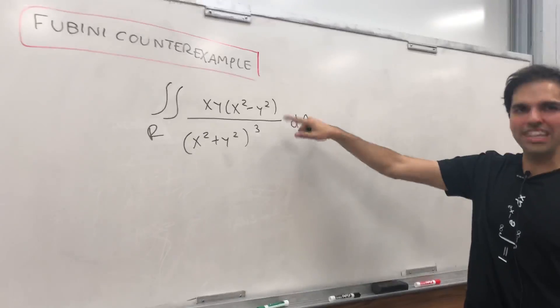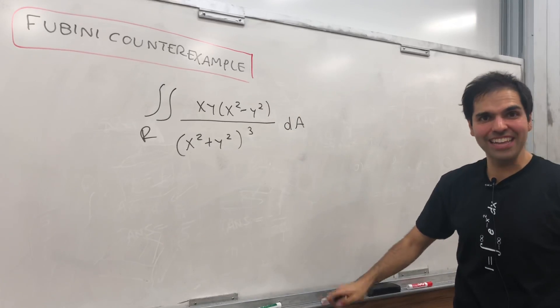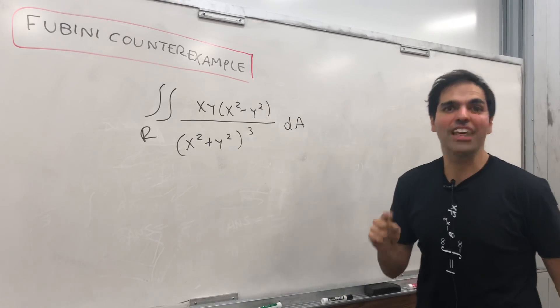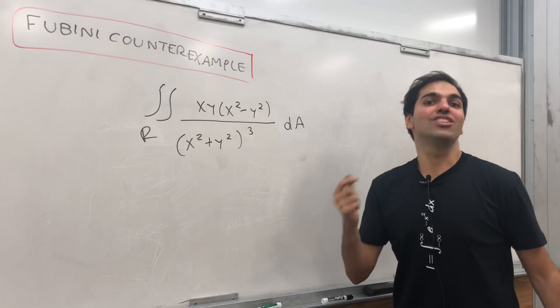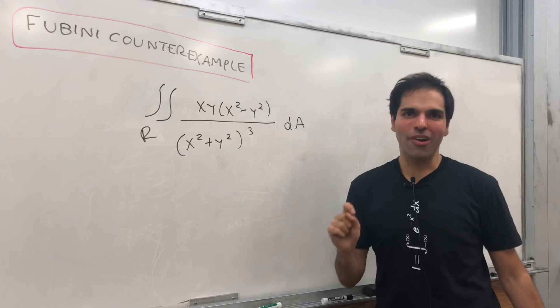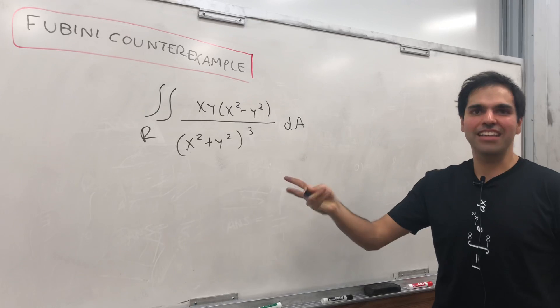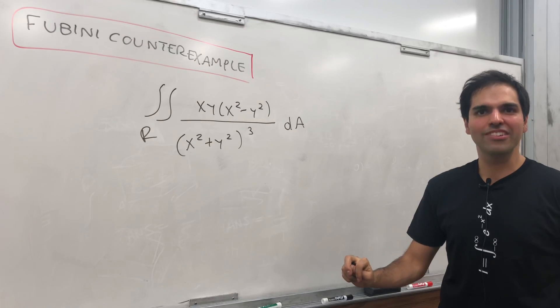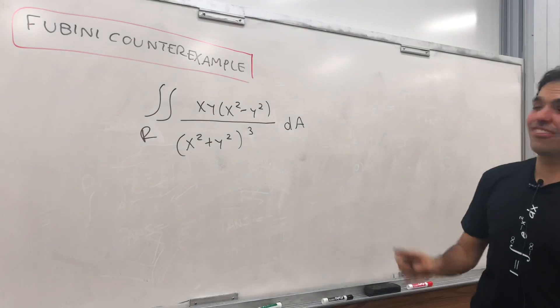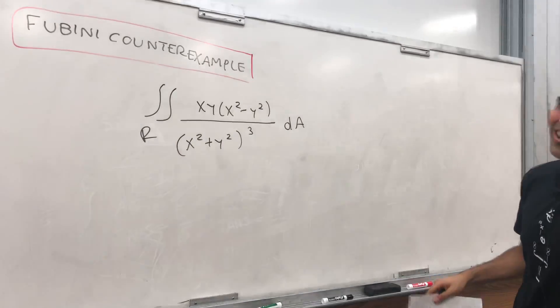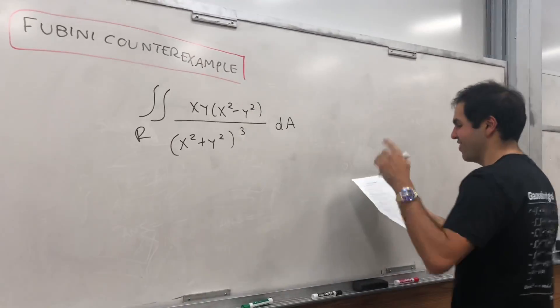I evaluate this double integral in two different ways and show that they don't give the same answer, which is really surprising, because in multivariable you learn that by Fubini you should get the same answer no matter which order you pick your integration in, but today we will see it's not because just one of the assumptions is not satisfied.